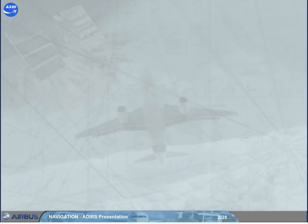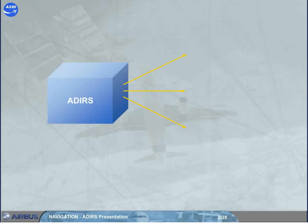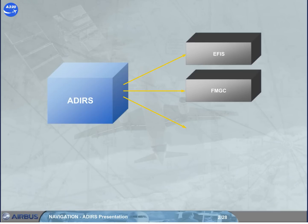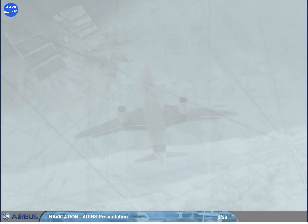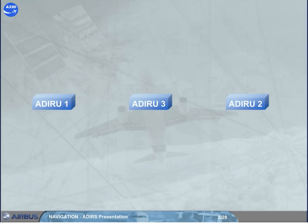The purpose of the Air Data Inertial Reference System, ADIRS, is to provide air data and inertial information to the EFIS system, the FMGC, and other users. The A320 has three separate but identical Air Data Inertial Reference Units.